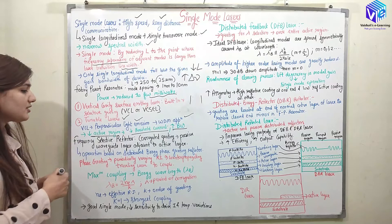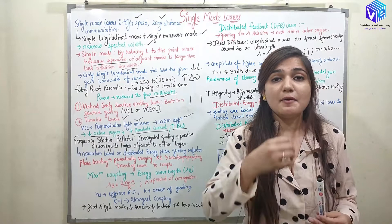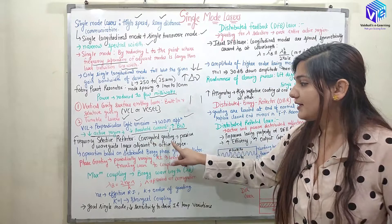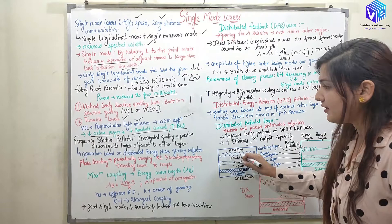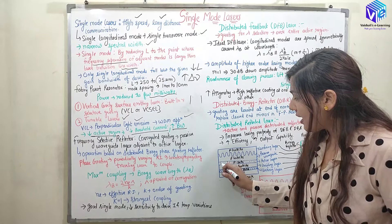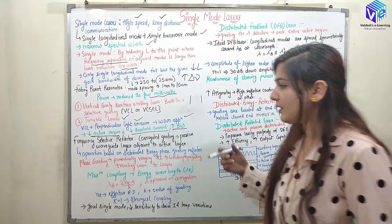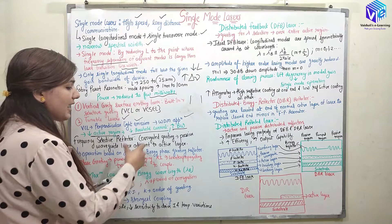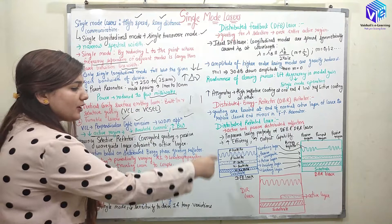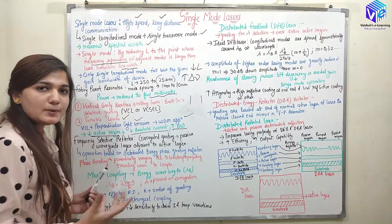Now we move to another category: the frequency selective reflector. Here, the reflector surface selects frequencies using differences in refractive index. We use corrugated gratings, which are passive waveguide layers adjacent to the active layer. The operation is based on the distributed Bragg phase grating reflector with a periodically changing refractive index.